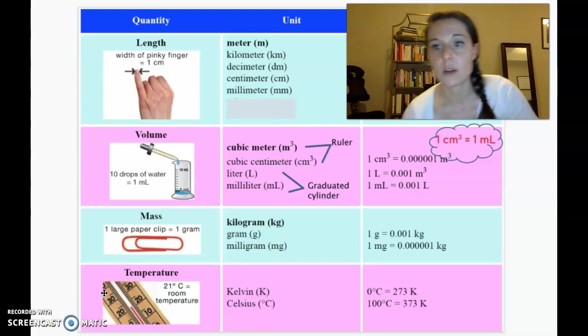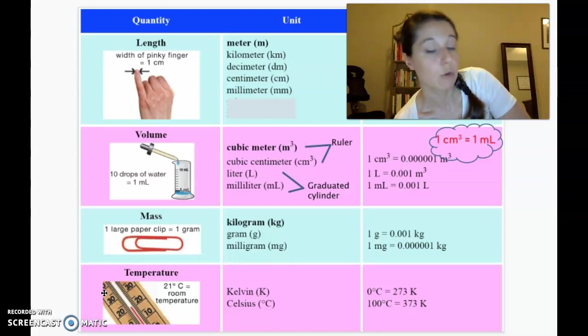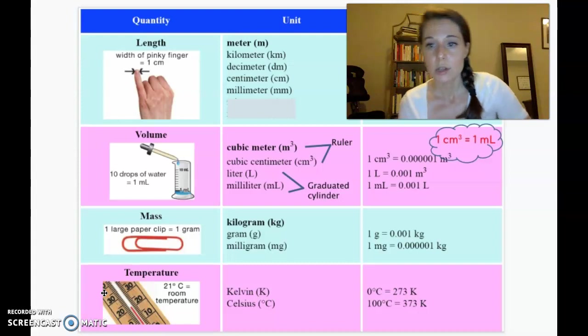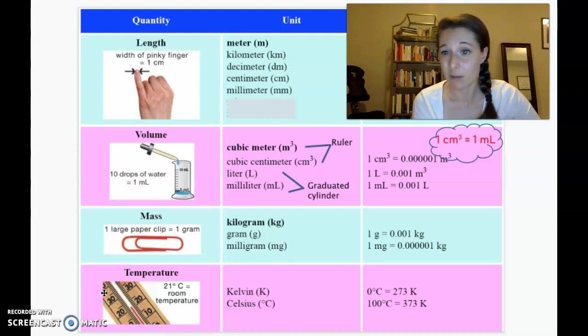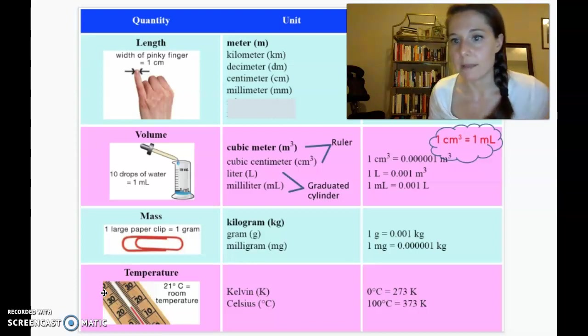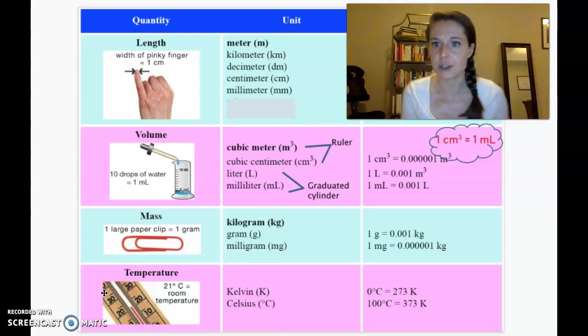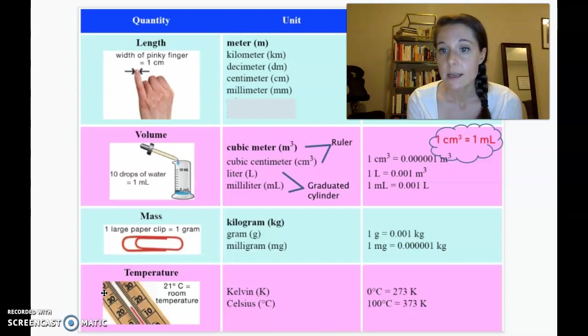And then temperature: the Celsius scale, if you don't spend a lot of time in other countries, the Celsius scale room temperature is 21 degrees, so you can use that to kind of estimate like, okay, are we talking really hot, really cold? 21 degrees is considered room temperature, which on a Fahrenheit scale would be like 70, 72-ish degrees.